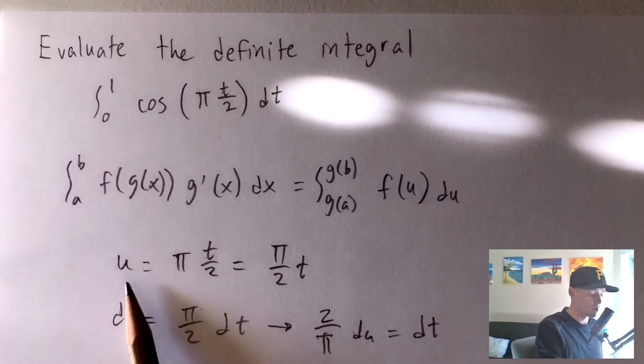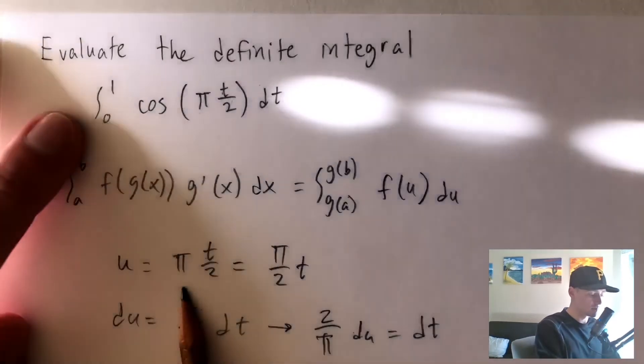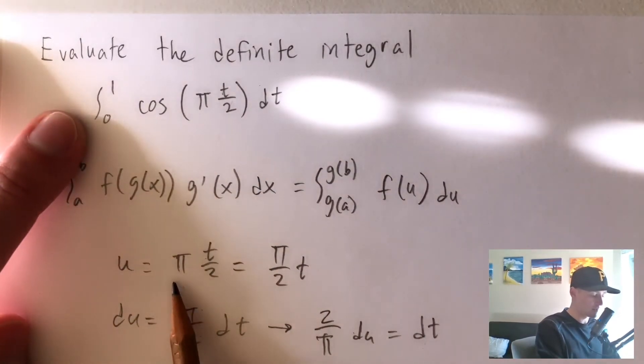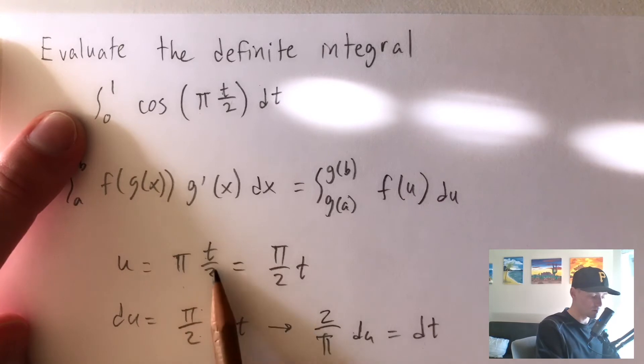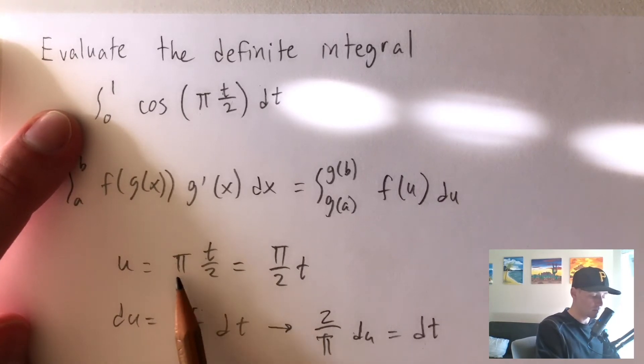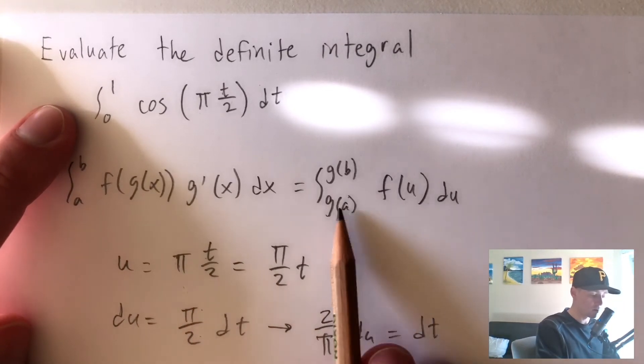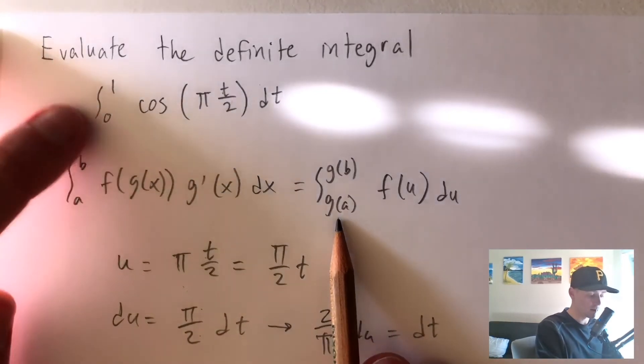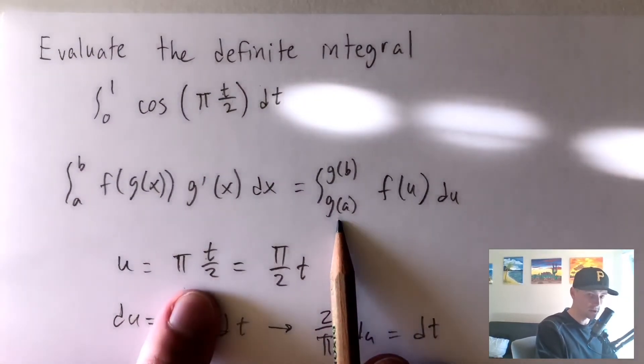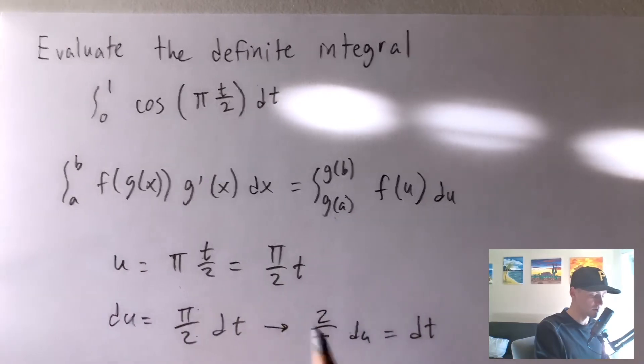So if we take 0 and plug it in for our u, which is pi times t over 2, pi times 0 over 2 is just 0. So our lower bound we got from plugging our old lower bound into this function that we said u was is also just going to be 0.